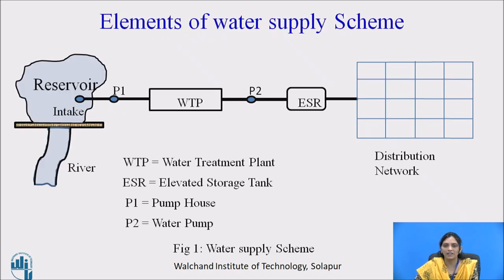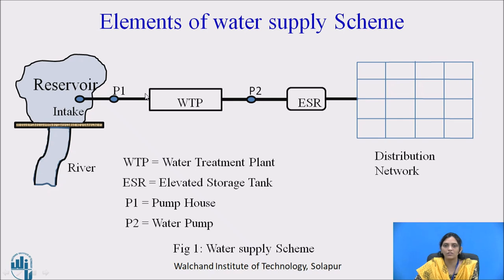This is a simple line diagram of the water treatment process. First, water is collected from the natural source of water, say a river, or some reservoir is constructed near the river through which water is collected. Then that raw water is stored in a water treatment plant. After treatment, water is stored in an elevated service reservoir — which is nothing but a water tank. Then, after sufficient storage, water is distributed in a distribution network. We will see in detail what are the units in the water treatment plant and how it is treated there.